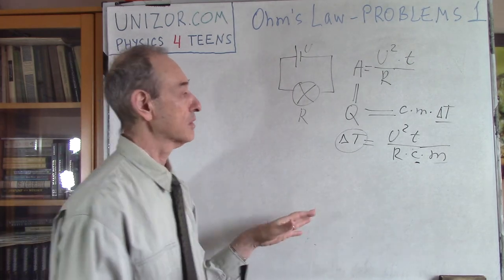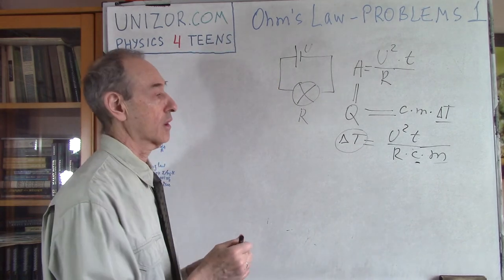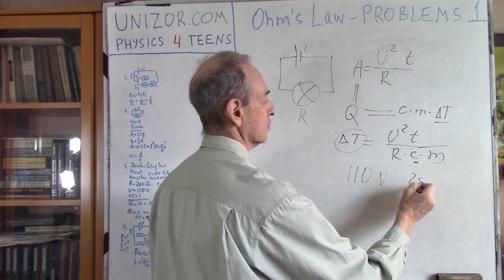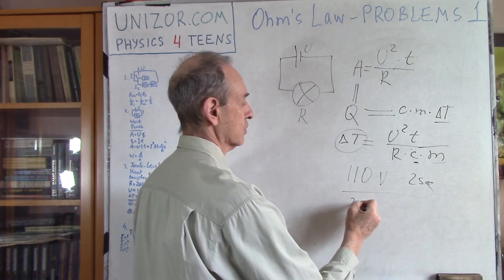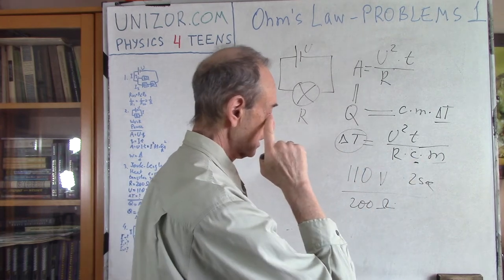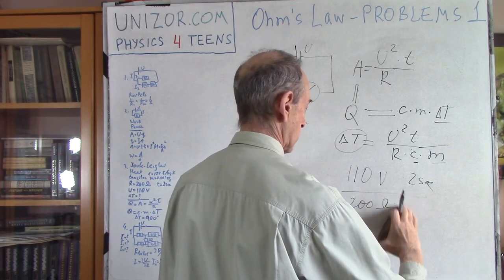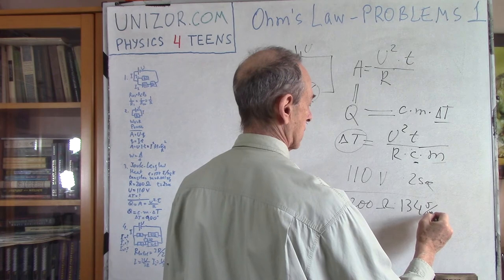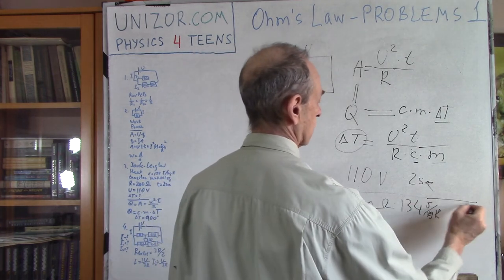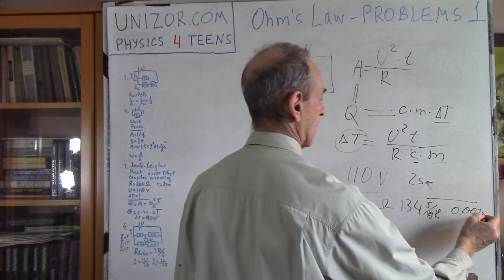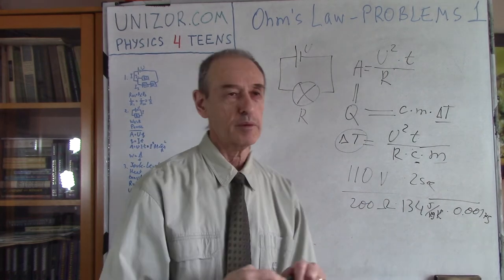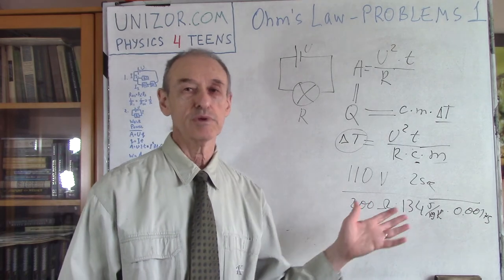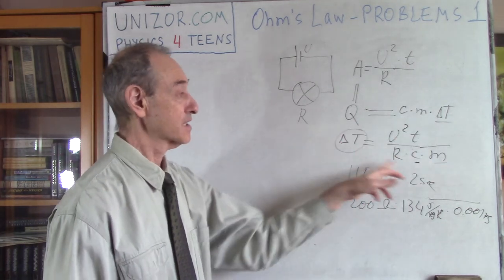Using the formula ΔT = U²·T/(R·c·m) with realistic values — 110 volts (normal for the US), T = 2 seconds, R = 200 ohms, specific heat for tungsten c ≈ 134 J/(kg·°C), and mass m = 0.001 kg — the calculation gives roughly a 900-degree temperature rise in 2 seconds. The exact numbers are in the lecture notes on the website. The key is the theory and the formula itself.